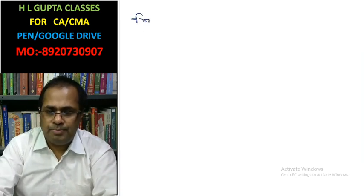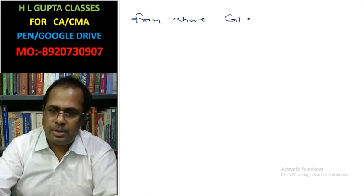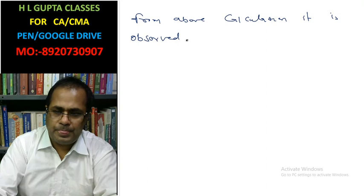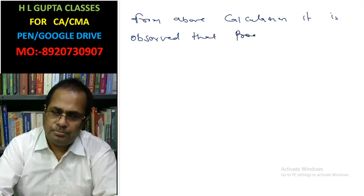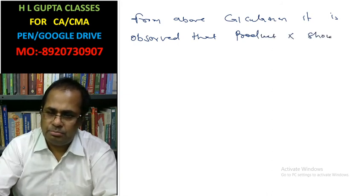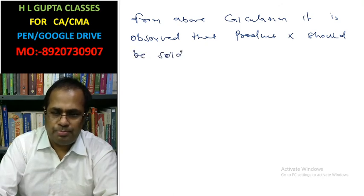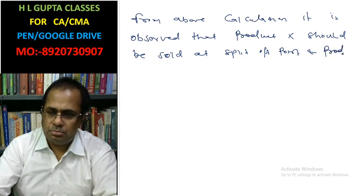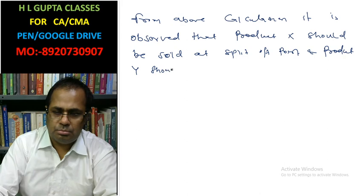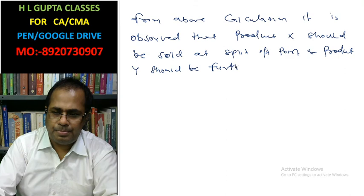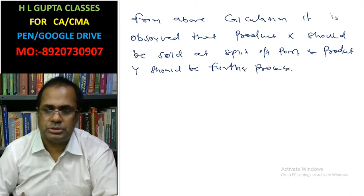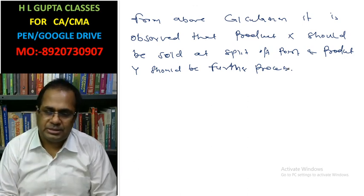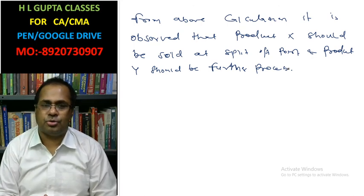From the above calculation it is observed that product X should be sold at the split-up point and product Y should be further processed, because X does not have any additional profit but Y has an additional profit of rupees 10,000. Thank you class, please like, subscribe and share my video.